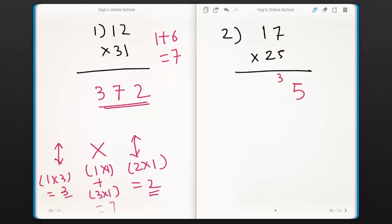Now cross multiplication. 5×1 is 5 plus 7×2 that is 14. 14 plus 5 is 19. So write 9 and take 1 as carry. Now 2×1 is 2.